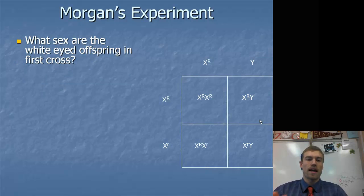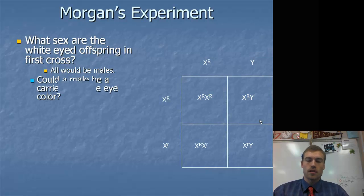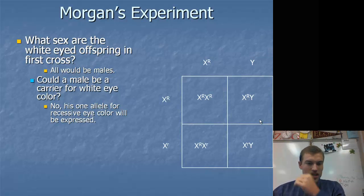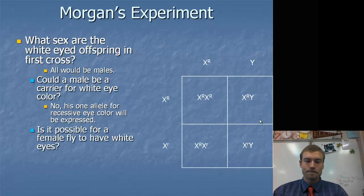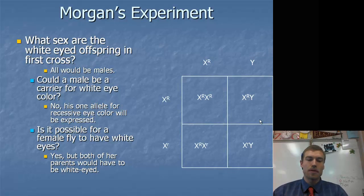What sex are white-eyed offspring in the first cross? All of the white ones are going to be male. Could a male be a carrier? No, they can't be a carrier because they only have the one allele. Is it possible for a female fly to have white eyes? Yes, but both of her parents would have to be white-eyed. You would have to have the father be white-eyed as well as either the mother needs to be white-eyed or the mother needs to be a carrier.